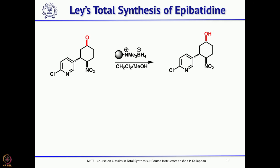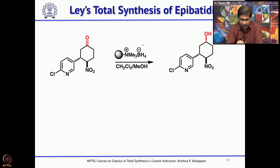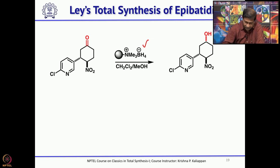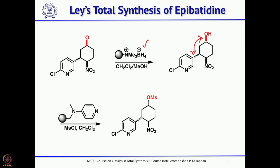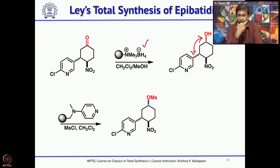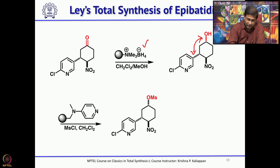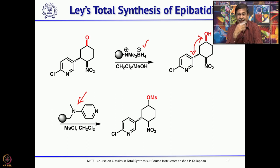The ketone was reduced with a polymer-supported borohydride reagent — the same reagent used earlier for reduction of the acid chloride — giving the syn alcohol with high stereoselectivity. Then mesyl chloride was used with a polymer-supported DMAP (dimethylaminopyridine) as base to mesylate the hydroxyl group. The nitro group was then reduced with borohydride reagent in addition to nickel chloride to selectively give the corresponding amino compound.